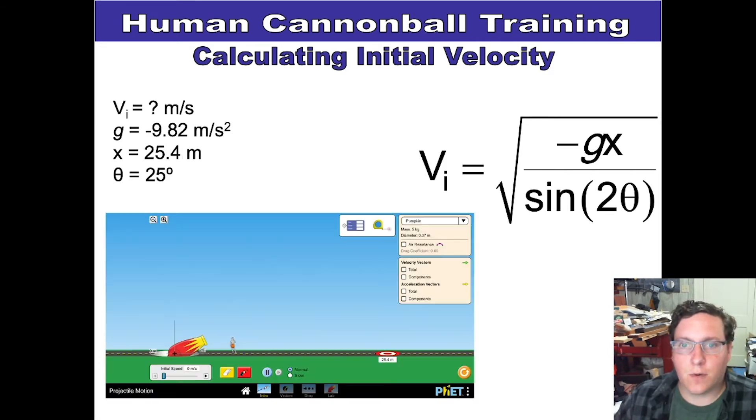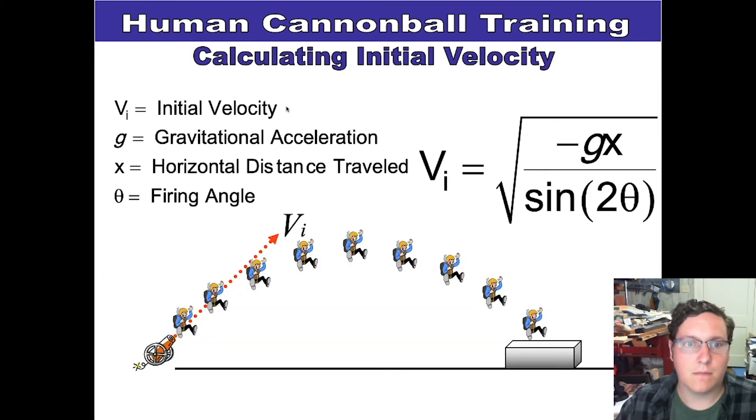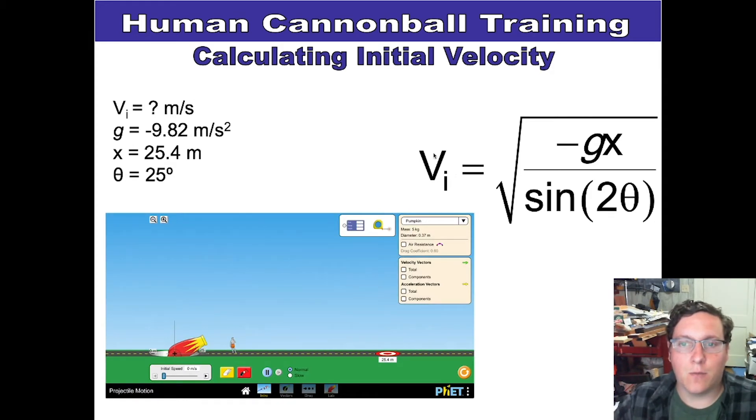Using this formula, we're actually going to take a look at the unknown value of velocity. We'll find that initial velocity by taking what we know about gravitational pull, the horizontal distance traveled, and then the sine command.